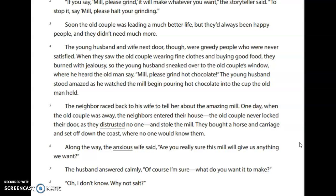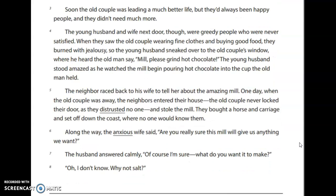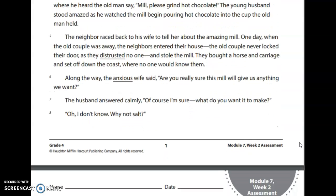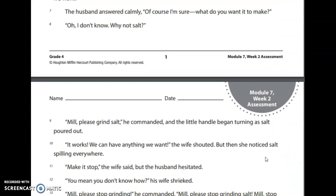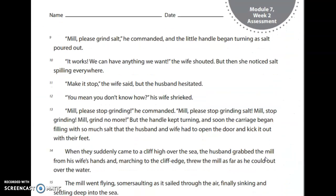Along the way, the anxious wife said, 'Are you really sure the mill will give us anything we want?' The husband answered calmly, 'Of course I'm sure. What do you want it to make?' 'Oh, I don't know — why not salt?' 'Mill, please grind salt,' he commanded, and the little handle began turning as salt poured out. 'It works! We can have anything we want,' the wife shouted, but then she noticed the salt spilling everywhere.